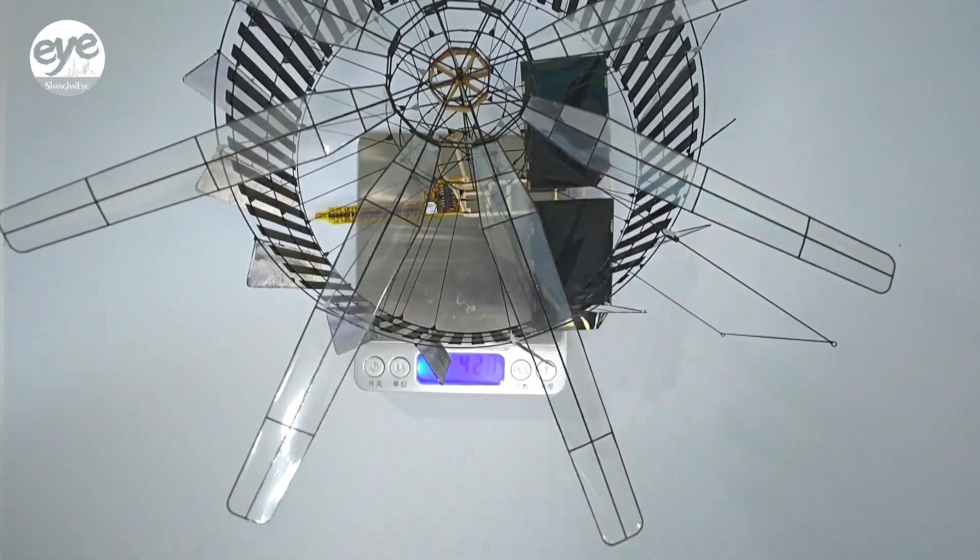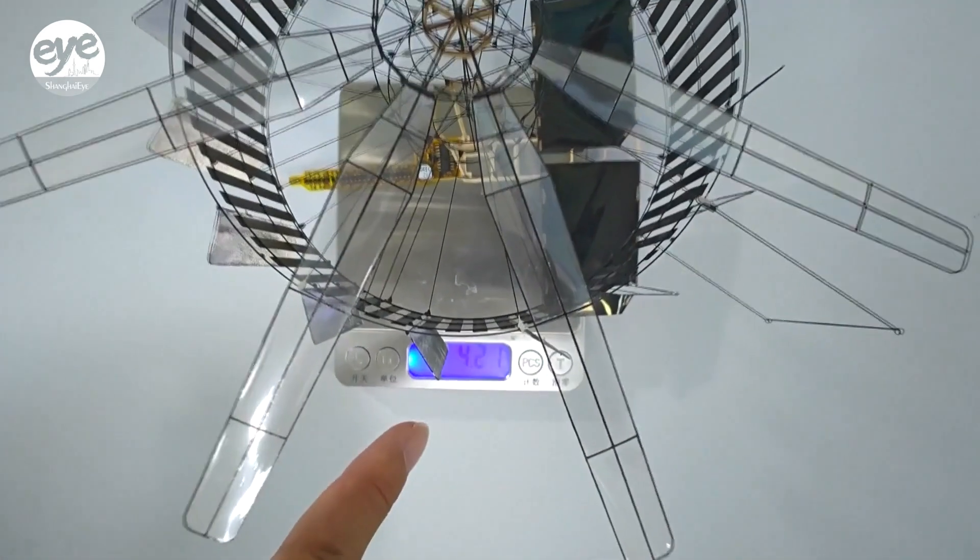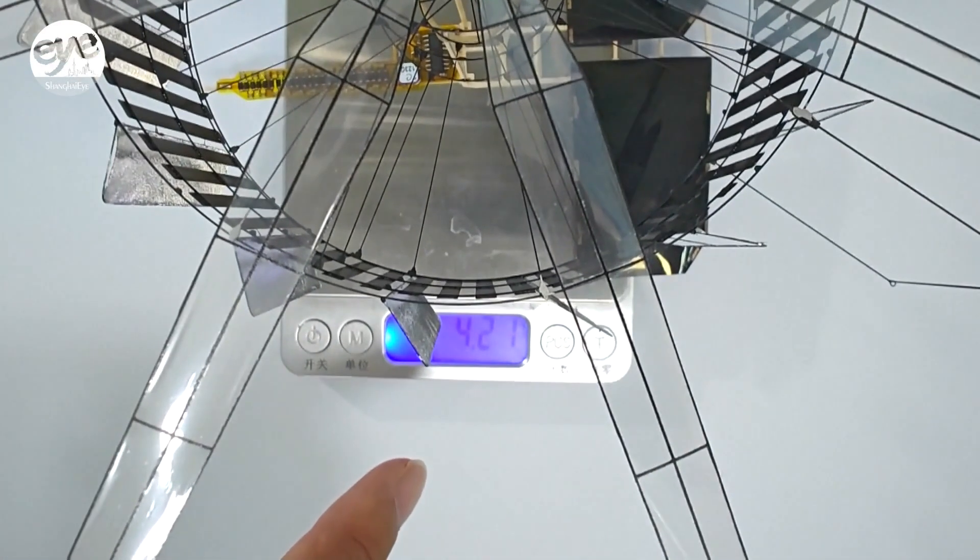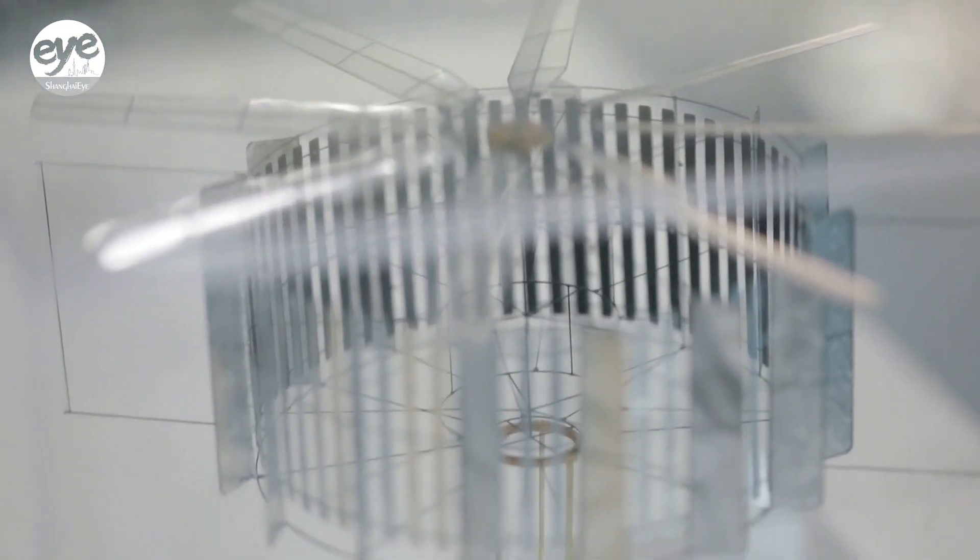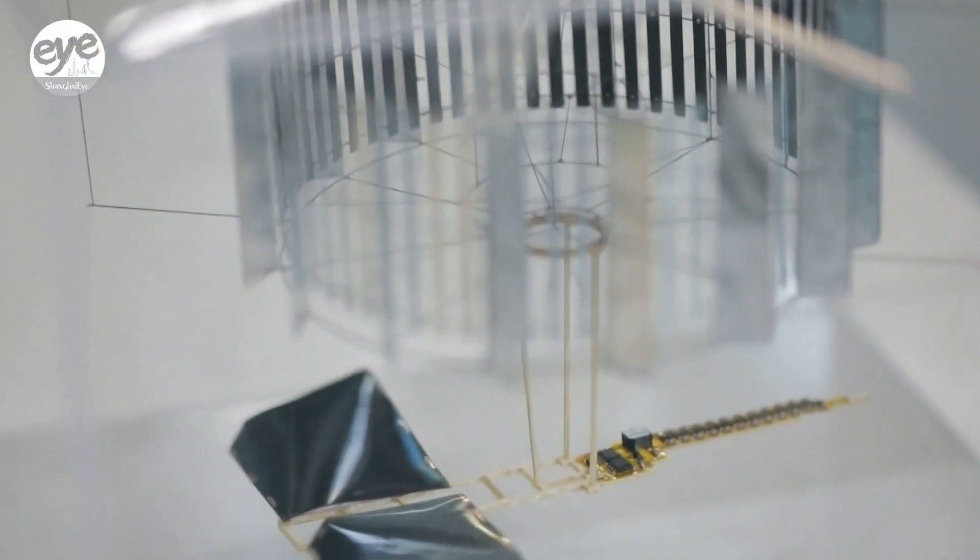Named after Coulomb's law, which describes the amount of force created when similar or opposite particles at rest repel or attract each other, the drone features an electrostatic motor powered by natural light.